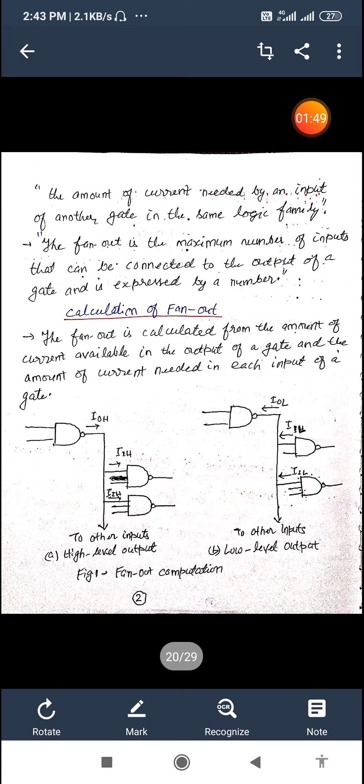Now how can we calculate the fan out? So for the calculation point of view we will see the figure fan out computation. So the fan out is calculated from the amount of current available in the output of a gate and the amount of current needed in each input of a gate as we can see in the figure.